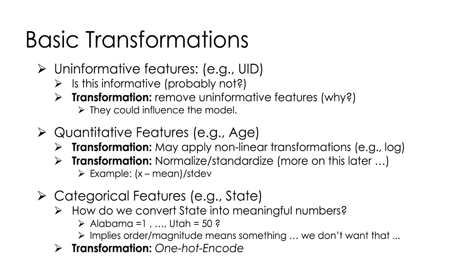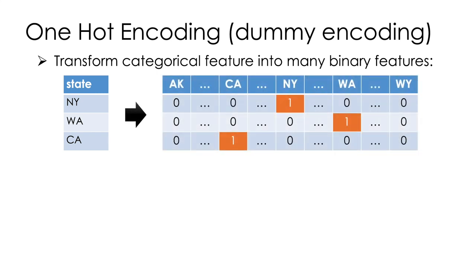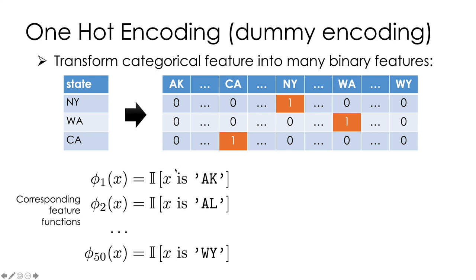One of the standard approaches to encode categorical features is something called one-hot encoding. The idea with one-hot encoding, or dummy encoding, is to transform our categorical feature into many separate feature columns. So state, New York, Washington, California, becomes a matrix. So we have 50 separate columns. And then in each column, we have a 1 or a 0 indicating whether or not, for that particular record, the state was that particular state. So on the first record, the state was New York, so every other column here would be 0 except for New York. And Washington, every other column would be 0 except for Washington, and so on. We can think of these as creating a bunch of separate feature functions, one indicator for each of the possible values x could take.